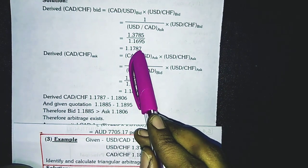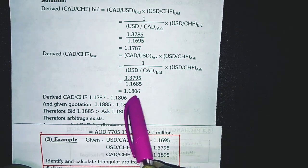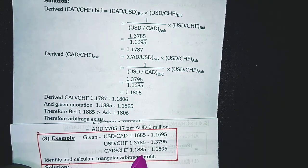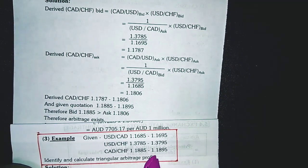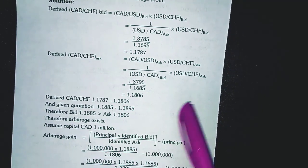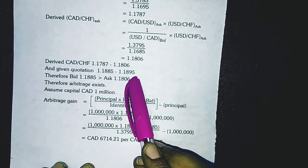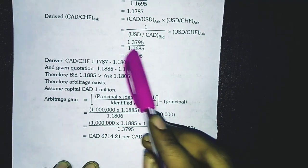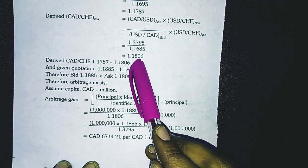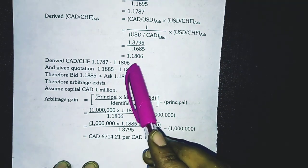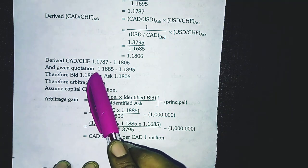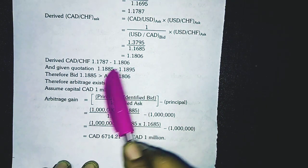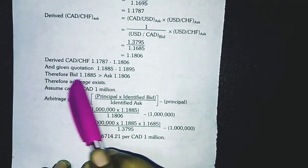In the question we are already given the CAD/CHF rate of 1.1885 as bid and 1.1895 as ask. Now we have to decide from where we are going to purchase the currency and where to sell it. We find the lowest rate, which is the derived ask of 1.1806, and the higher rate, which is the given bid of 1.1885. This means we purchase the currency at 1.1806 and sell at 1.1885.